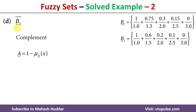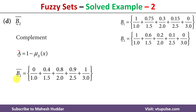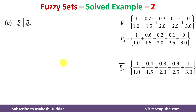Similarly, for the complement of fuzzy set B2, we apply the same formula: complement equals 1 minus the degree of membership. For element 1, the degree of membership is 1, so 1 minus 1 equals 0. For element 1.5, the degree of membership is 0.6, so 1 minus 0.6 equals 0.4, and so on for the remaining elements.